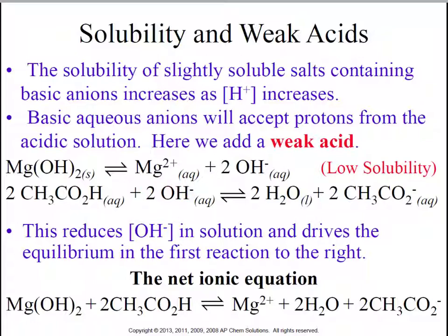we are essentially, once again, eliminating some of those hydroxides, which is going to drive the reaction towards the right and increase the solubility of the magnesium hydroxide. The net ionic equation would be magnesium hydroxide plus the undissociated form gives us magnesium ions, water, and acetate.